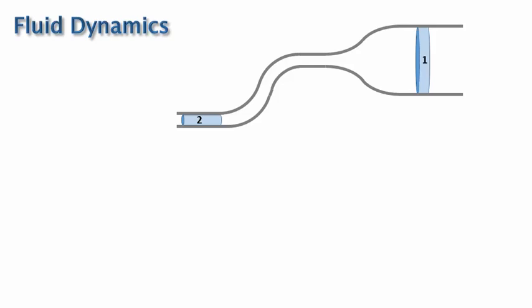Now consider a volume of fluid that moves from location one here to location two here. At location one, the fluid is at an average height of y1 and has a cross-sectional area of A1. And at location two, it is at an average height of y2 and has a cross-sectional area of A2. Now let's apply the conservation of energy to this volume of fluid as it travels from location one to location two.